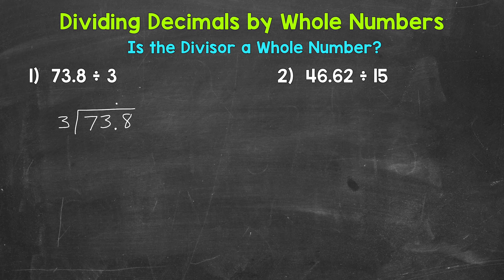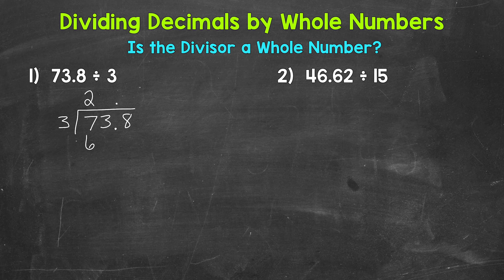Now we go through the division process — the same process we use when we divide whole numbers: divide, multiply, subtract, bring down, repeat. We start with divide: 7 divided by 3. How many whole groups of 3 in 7? That's 2, which gets us to 6. Multiply: 2 times 3 is 6. Subtract: 7 minus 6 is 1. Bring down. Now we have 13 and we repeat.